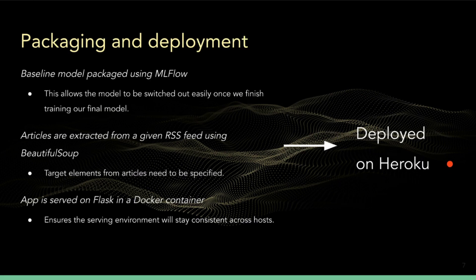To productionalize our app, we packaged the baseline model using MLflow. We used BeautifulSoup to extract the articles from a given RSS feed, and in order to get the text from each article, we have to specify the target elements to a find-all method, which turns out to be a little bit messy. We serve the app on Flask, and we put the whole environment into a Docker container, which makes sure that the serving environment stays consistent across hosts. Once we do this, we put the container onto Heroku, which then deploys the app publicly.